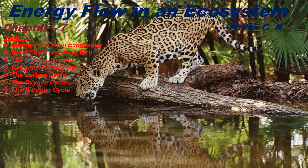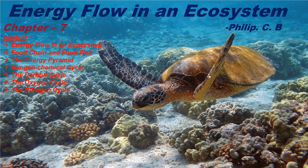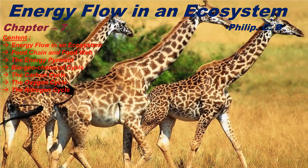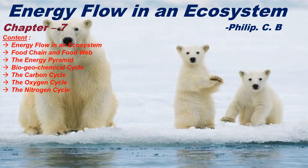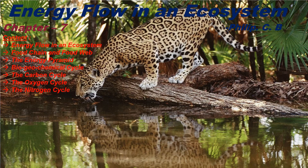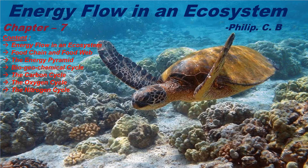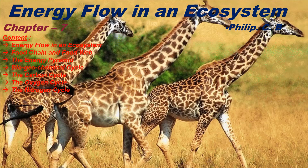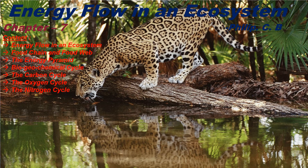Hello students. Today we are going to learn Chapter 7: Energy Flow in an Ecosystem. In this chapter we will cover energy flow in an ecosystem, food chain and food web, the energy pyramid, biogeochemical cycle, the carbon cycle, the oxygen cycle, and the nitrogen cycle.